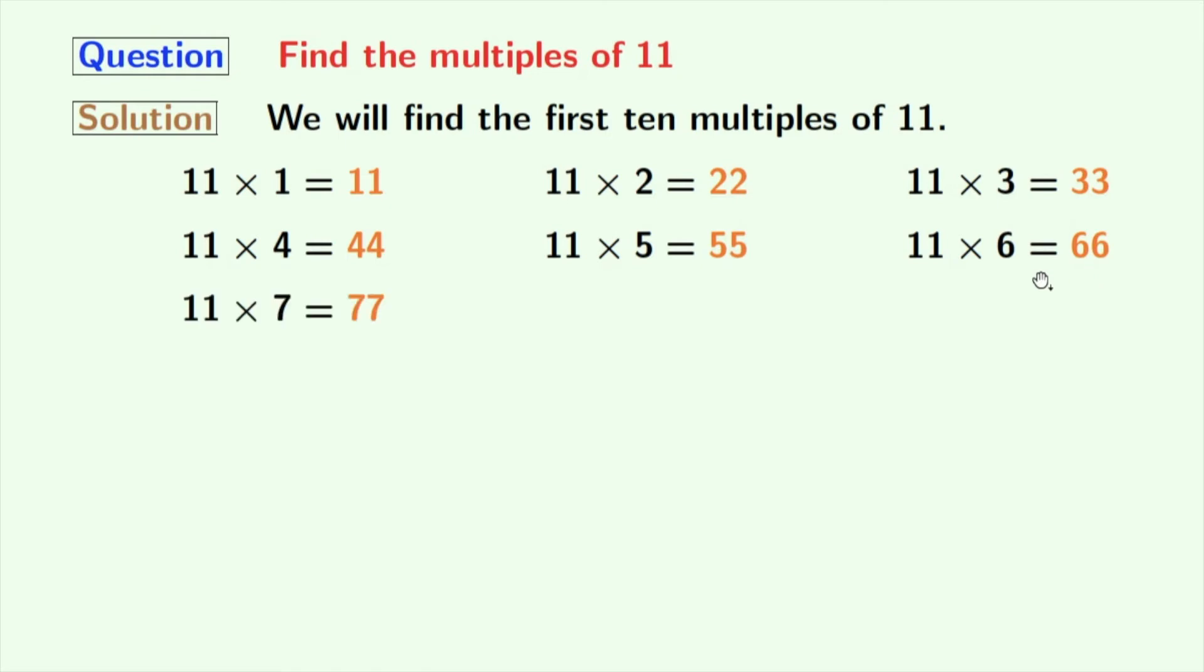If we multiply 11 with 7, we get 77. Multiplication of 11 and 8 gives us 88. Multiplication of 11 and 9 produces 99.